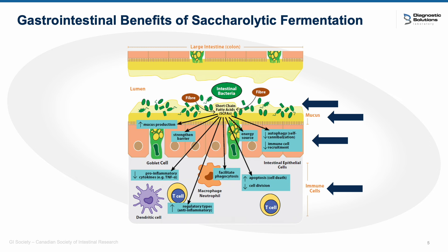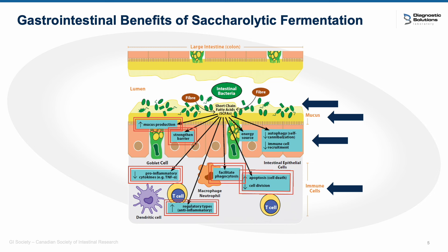The byproducts of sacrolytic fermentation play a huge role in keeping this barrier strong and the immune system stable. They help to increase mucin production from goblet cells, strengthen tight junctions between epithelial cells, decrease the release of cytokines and chemokines that recruit pro-inflammatory immune cells, and drive T cells to develop into Treg cells, which are anti-inflammatory and help limit autoimmune disease. When neutrophils are exposed to acetate and propionate, it facilitates phagocytosis of bacteria. Butyrate decreases cell division and increases apoptosis in reactive and inflammatory T cells.